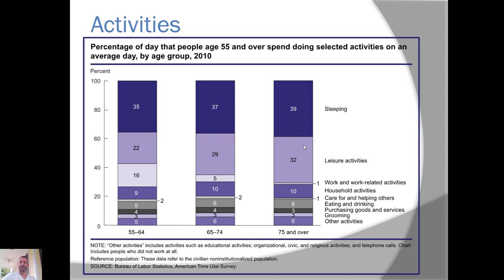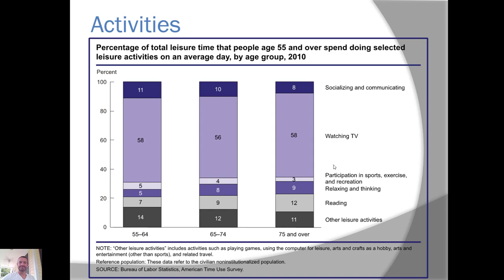If I were to ask you how an older adult spends most of their time, a third of their day is sleeping — that's eight hours out of 24. If you look at leisure activities, you might think that's awesome, but hit pause and ask yourself: what does a leisure activity mean for an older adult? When we break down leisure time, we see watching TV, participating in sports and exercise at about 3 percent, relaxing and thinking, reading, and other leisure activities. A majority of their leisure time is spent watching TV.